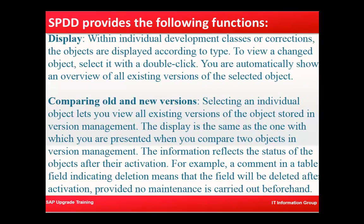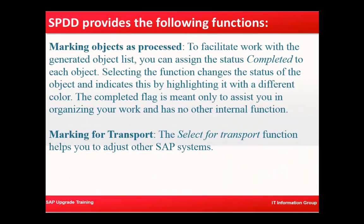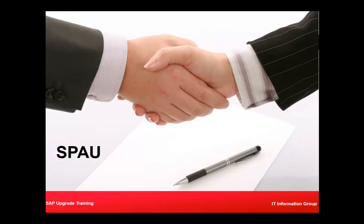SPDD provides the following functionality: within individual development classes or corrections, objects are displayed according to type. To view a changed object, select it with a double-click and you will automatically see an overview of existing versions of the selected objects, comparing old and new versions. Using SC11 we can decide what to do for them — returning to SAP standard or adapting modifications. Objects can be marked as processed with a complete flag, and marked for transport to adjust other SAP systems.